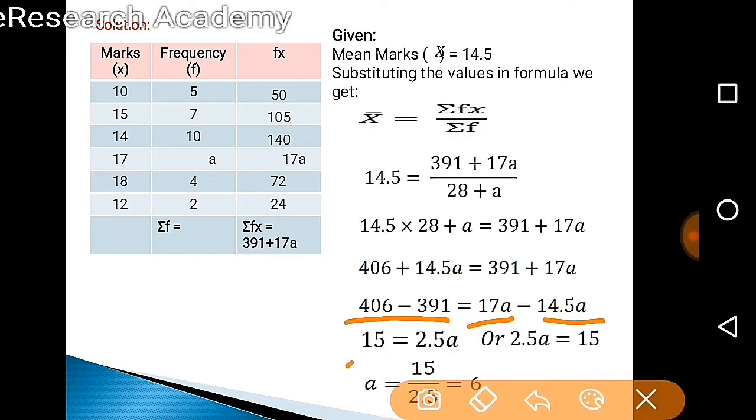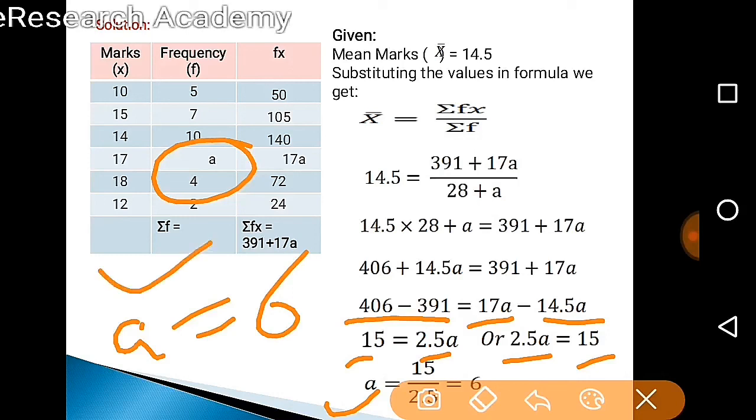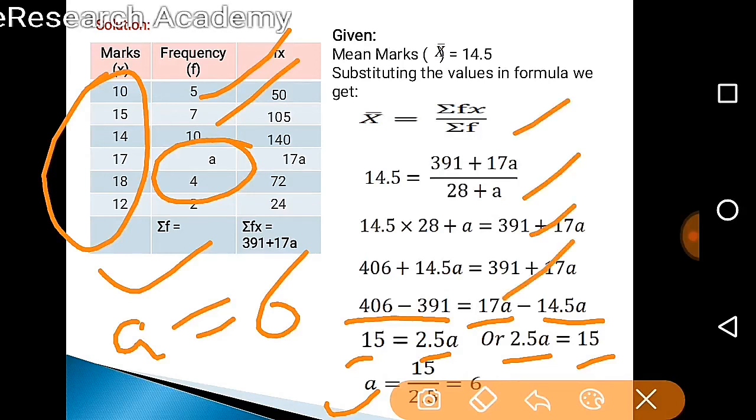This gives us 15 equals 2.5A, or 2.5A equals 15. Hence A equals 15 upon 2.5, that is 6. Now we have calculated our missing frequency, A equals 6. By this way we calculate missing frequency in individual, discrete, and same we apply in a continuous series as well, because in continuous series we calculate the mid value, this becomes our X, and there again we are missing some frequency.